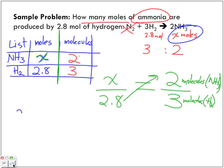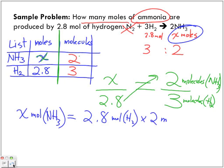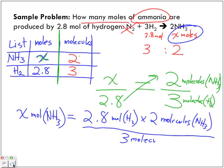To isolate for x, I'm just going to bring this 2.8 over, and I'm going to be left with x mole of ammonia equals 2.8 moles of hydrogen times two molecules of NH3 over three molecules of H2. Look what cancels out: molecules, molecules, H2, H2, and I'm left with ammonia.